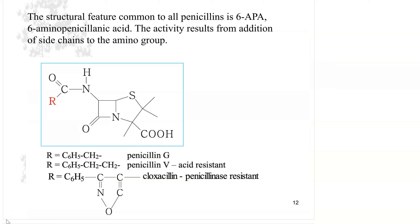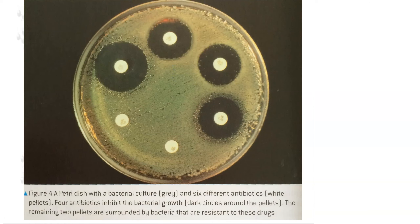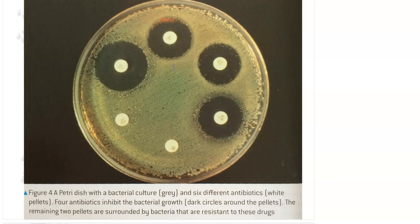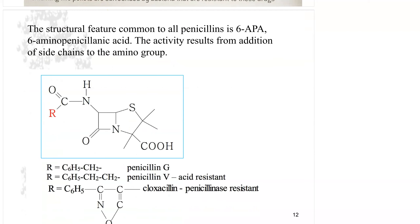The structural feature common to all penicillins is 6-APA, or 6-aminopenicillanic acid. The activity results from the addition of the side chain. Looking at the previous picture with the six different antibiotics — four effective and two not — that is due to the differences in the side chains, which is the R functional group shown in red. That side chain group is what causes the difference in activity.